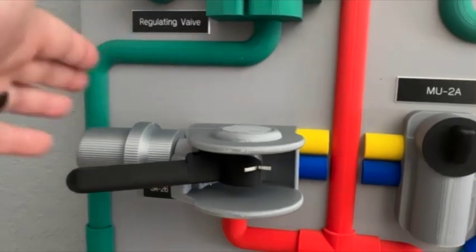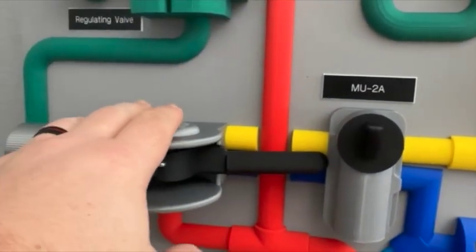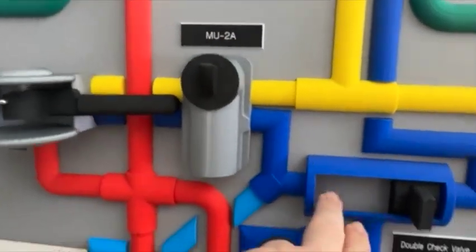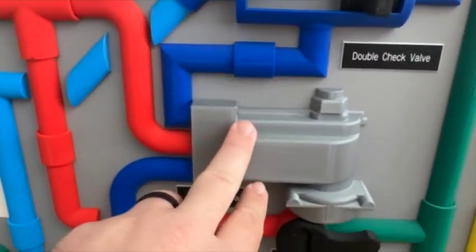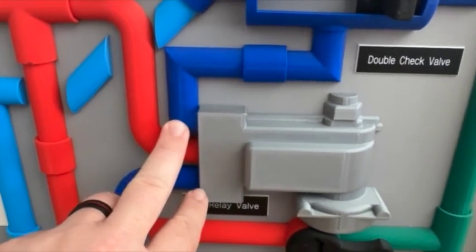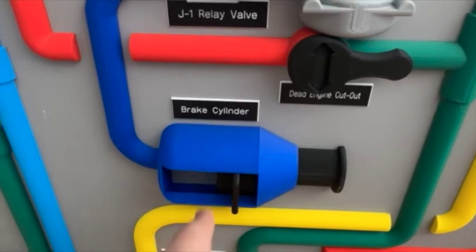Through the SA-26, through the MU-2A, down into the double check, forcing it over, flowing into the J1. The J1 then directs the main reservoir air to apply the brake cylinder.